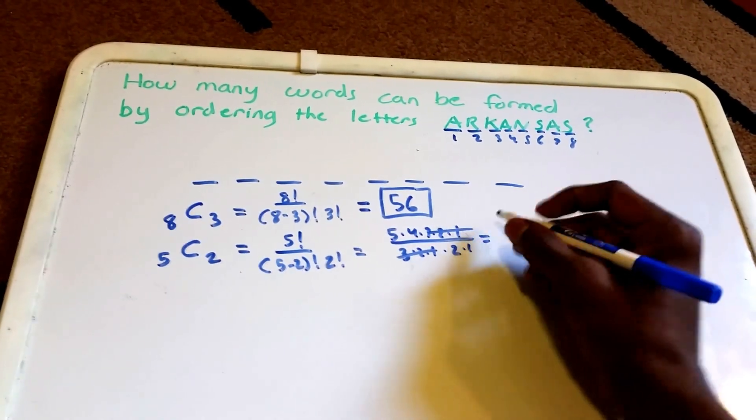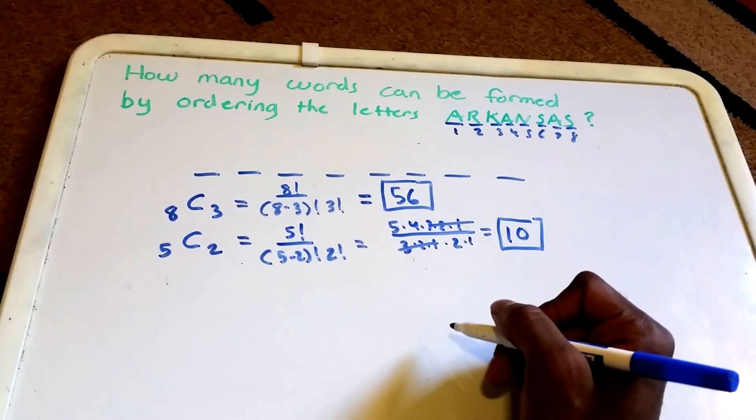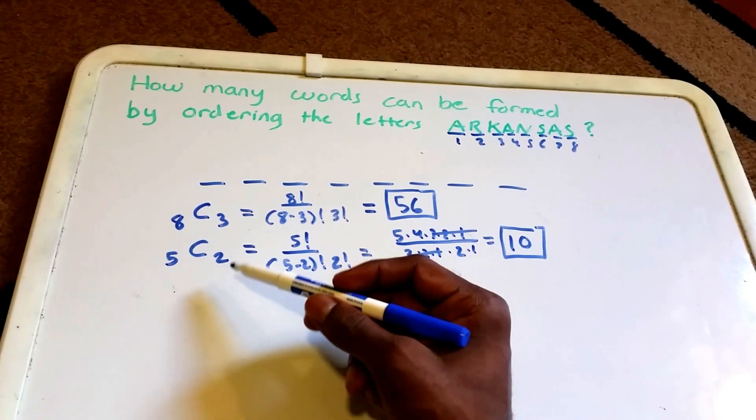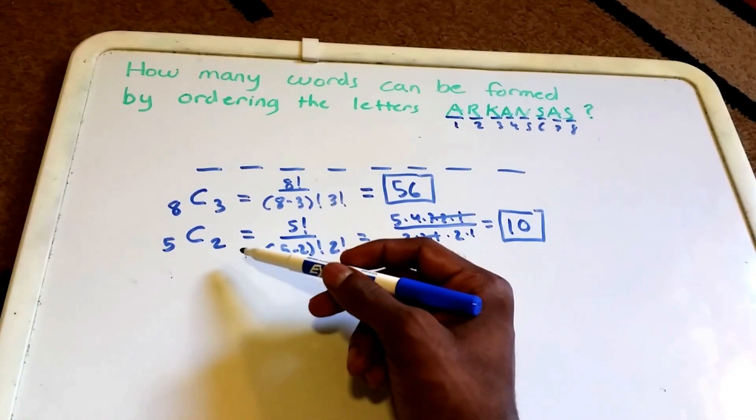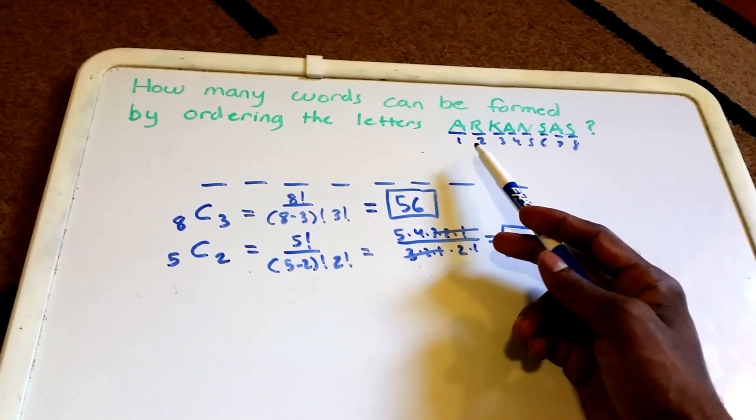This will cross out here, so this will give me 5 times 2, which is 10. Now we have chosen five spots already, so that leaves us with three left.